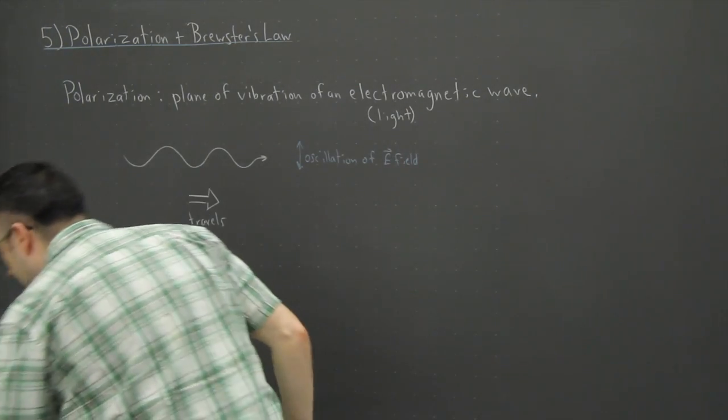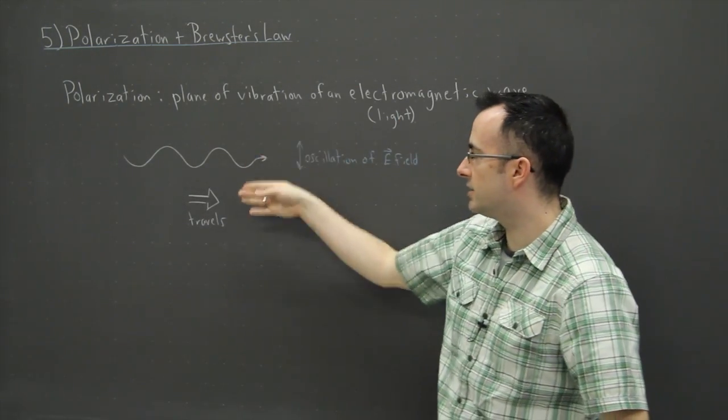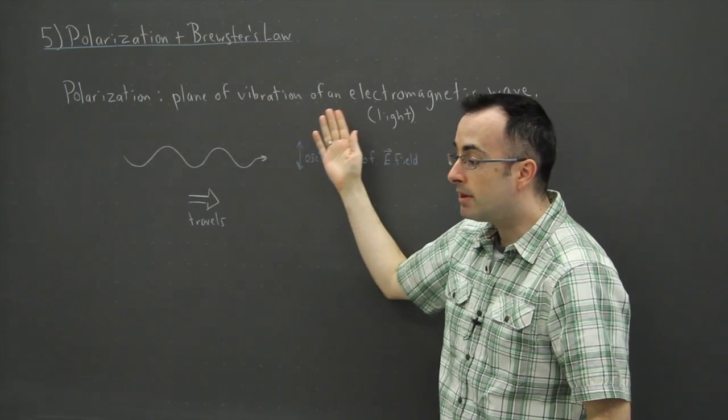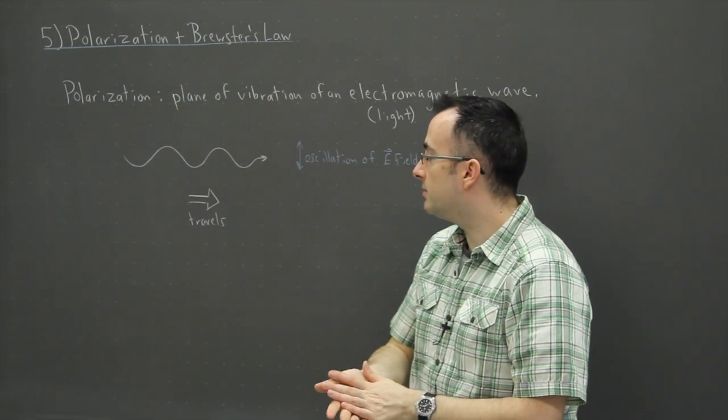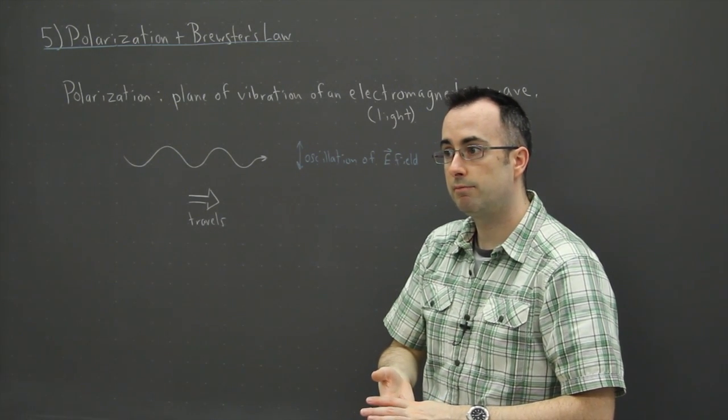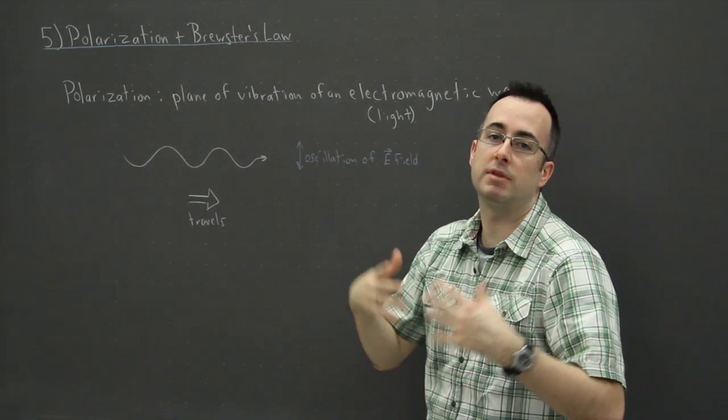Well then, if it oscillates this way, let's say straight up and down, then I could say that this thing is polarized vertically. But the problem is, light that comes out from the sun is not polarized. Well, it's randomly polarized, we say.